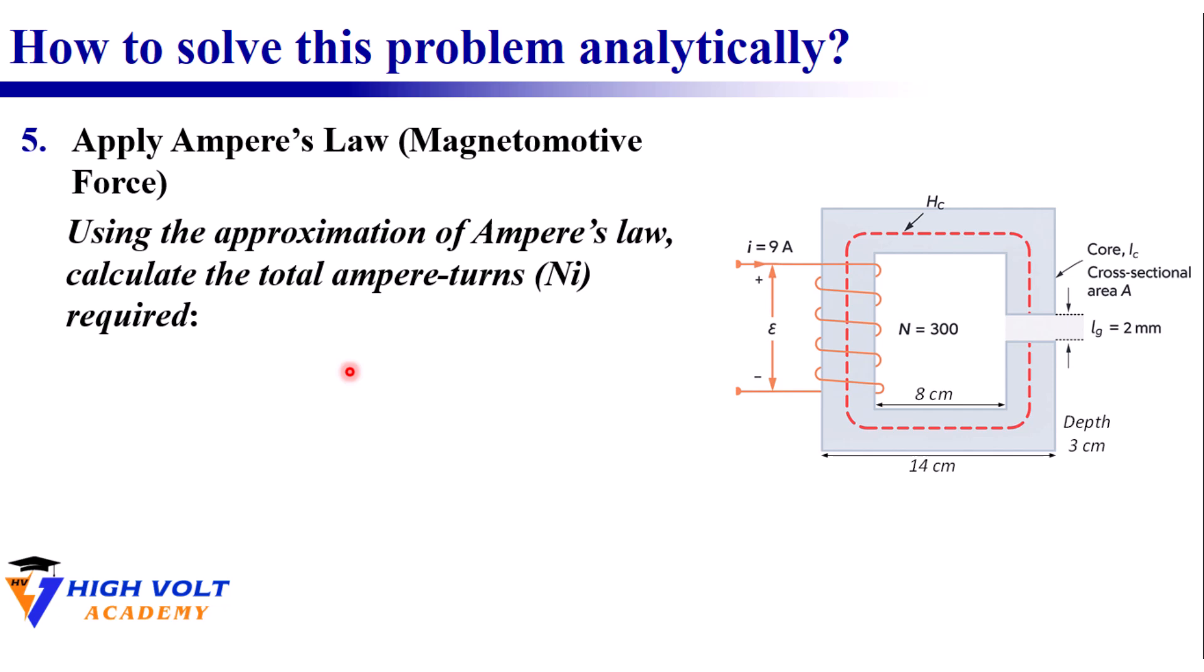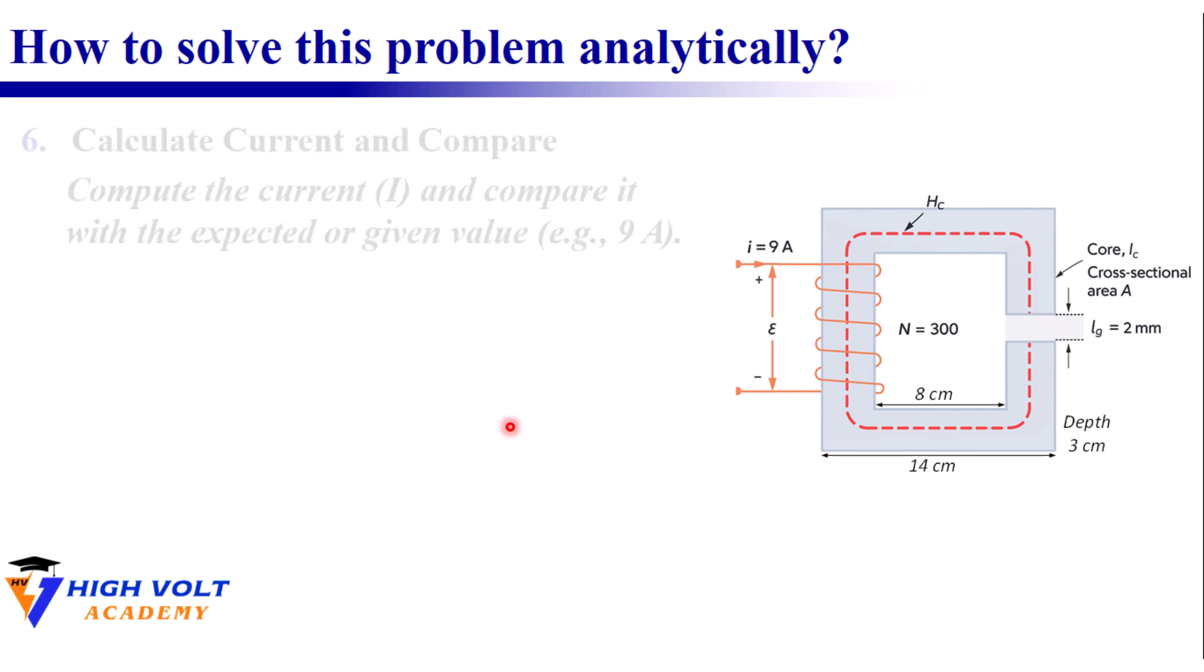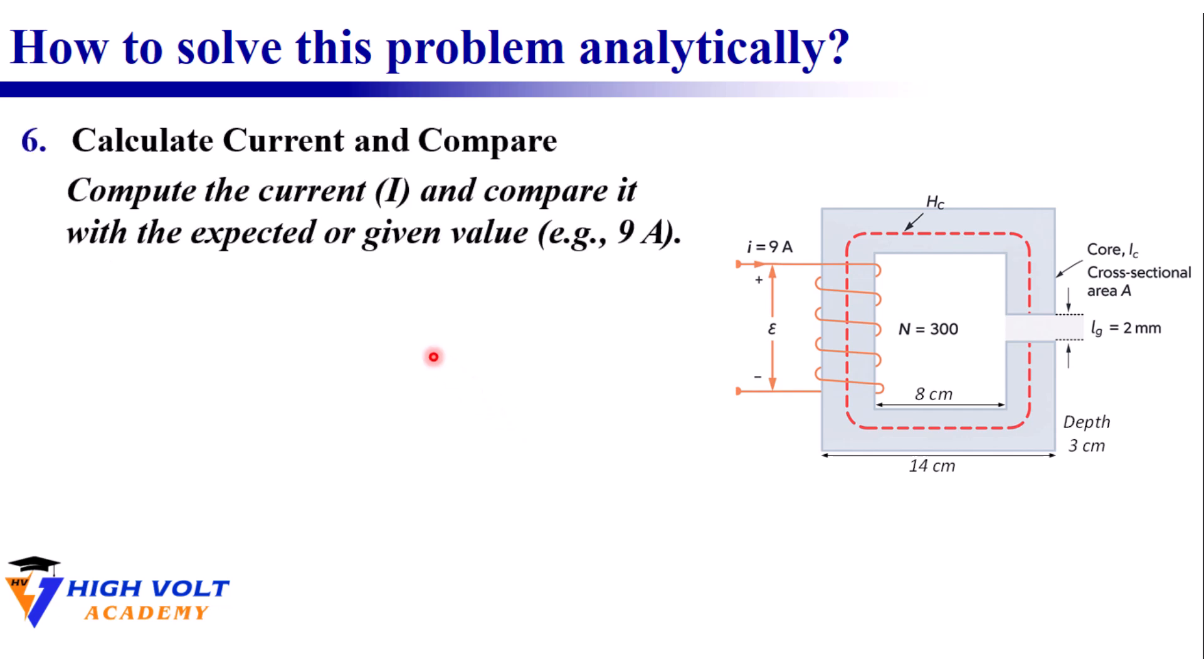In the next step we apply Ampere's law for the total magnetomotive force. The line integral of H·dl over the closed magnetic path equals NI, the total current turns. We approximate this integral using Hg·lg + Hc·lc where lc is the dotted red line.